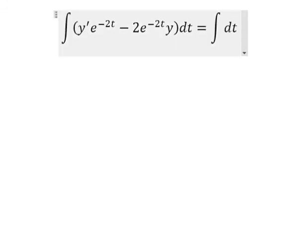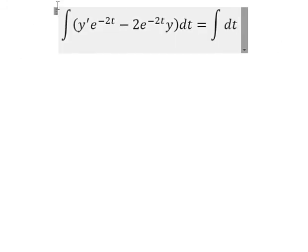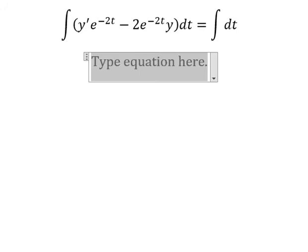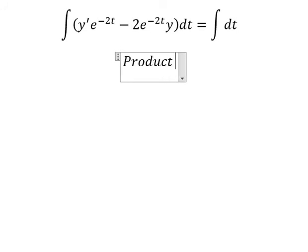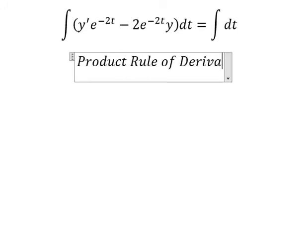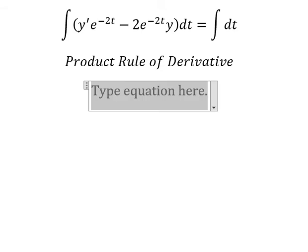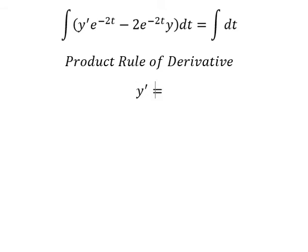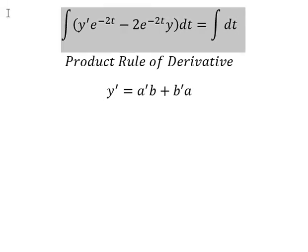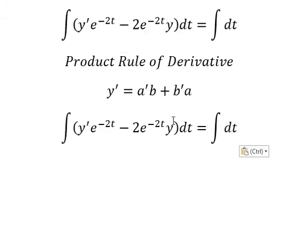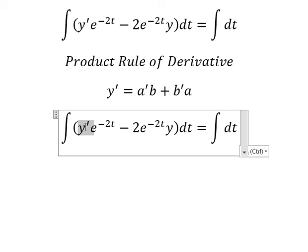Next we can apply the product rule of derivative. So we have first derivative of y equals to first derivative of a multiplied by b plus first derivative of b multiplied by a. This one is the first derivative of a multiplied by b, this one is the first derivative of b multiplied by a.